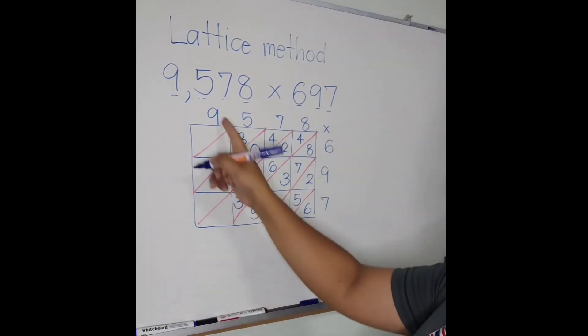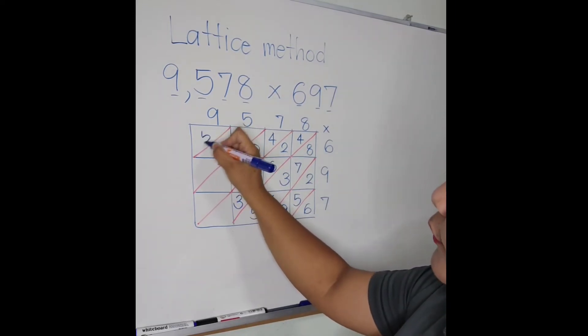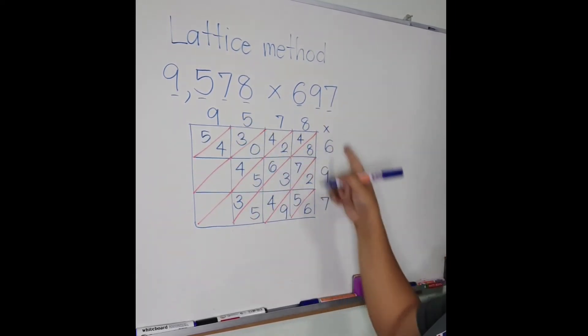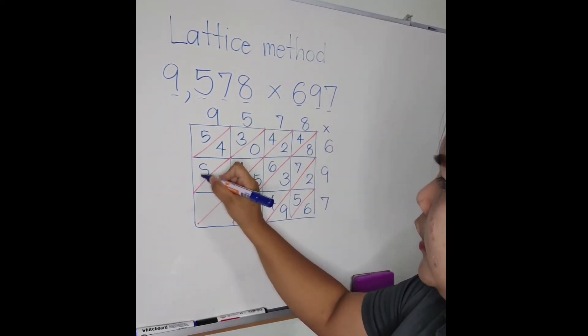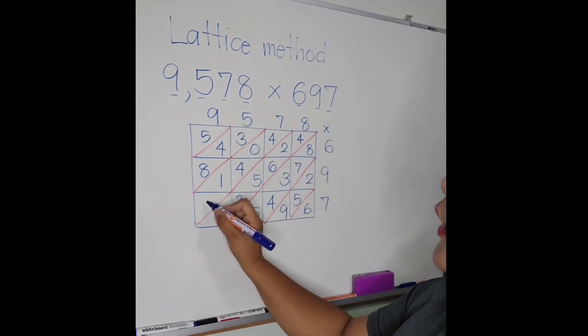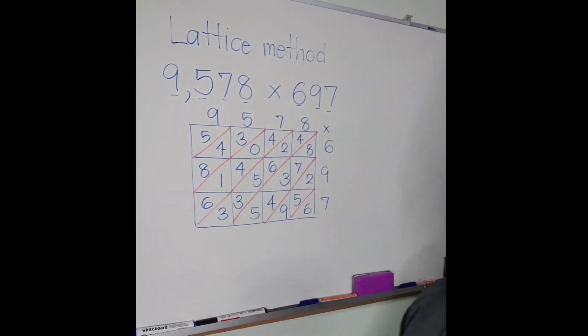5 times 7 is 35. 9 times 6 is 54. 9 times 9 is 81. 9 times 7 is 63. Next, you are going to add.